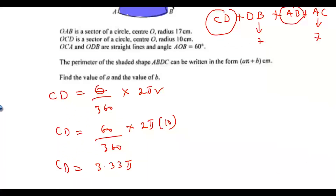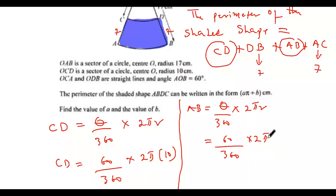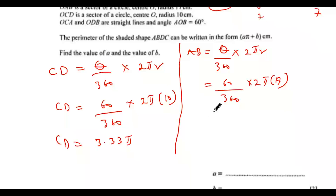Similarly, let's find the value of AB. AB equals theta over 360 times 2 pi times R. That would be 60 degrees over 360 times 2 pi times 17. If you do this, you should get 5.67 pi. So that would be AB.